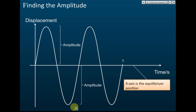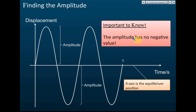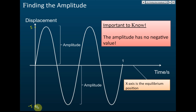Either the maximum point or the minimum point from the equilibrium position gives the amplitude. It is important to know that amplitude has no negative value. For example, if the minimum point is at negative 5 cm, the amplitude is still 5 cm, not negative 5. Even though the displacement at that point is negative 5, the amplitude is 5. Never give amplitude a negative value.